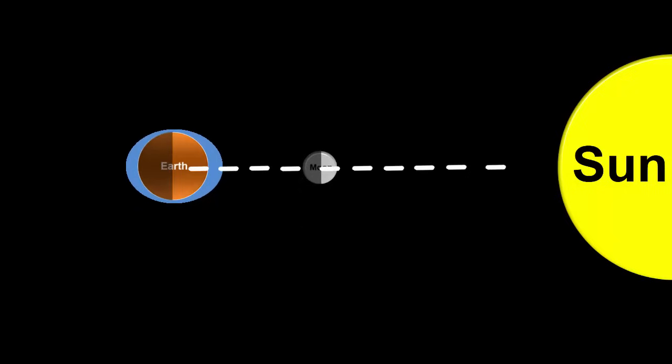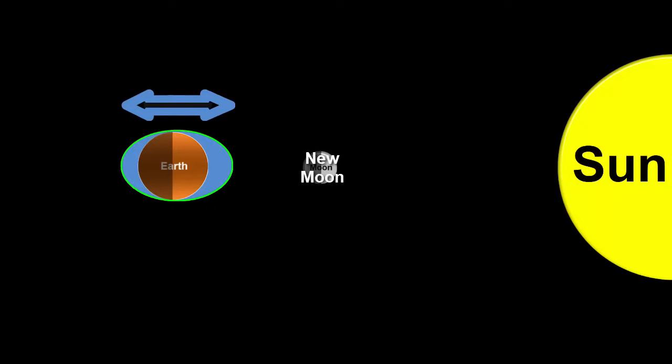But this is important when the sun and moon line up so their gravitational attractions combine to make super tides. This happens at the new moon, making the high tides higher and the low tides lower. This extreme tide is called a spring tide.